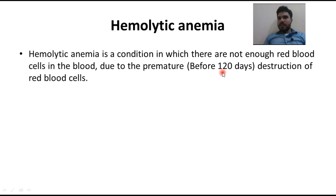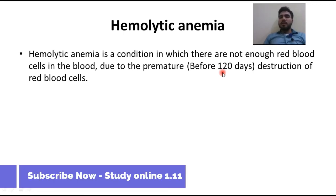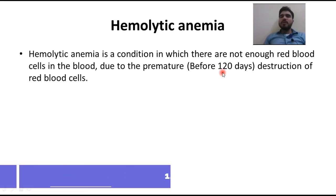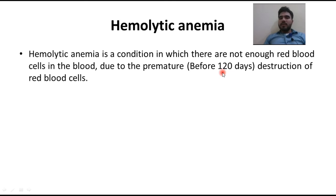There will be oxygen deficiency at the tissue level, which can come from an immune disorder. Due to some autoimmune disorder, the immune system will destroy blood cells. The body's normal RBC lifespan is around 37% but in premature form the destruction rate is very high.